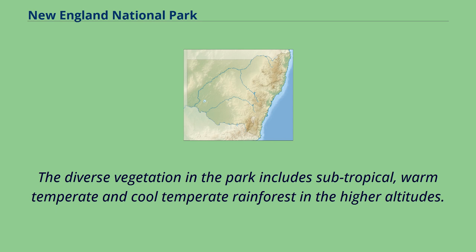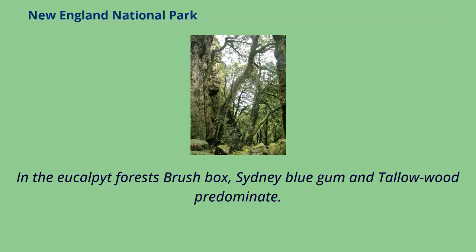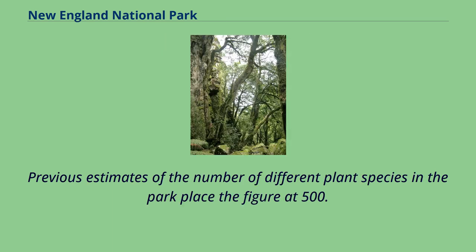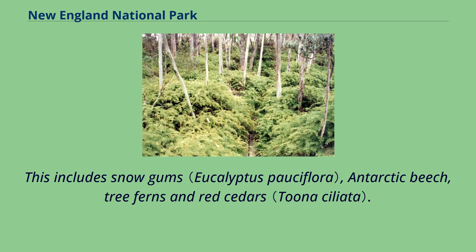The diverse vegetation in the park includes subtropical, warm-temperate and cool-temperate rainforest in the higher altitudes. There are also areas of sclerophyll forest, subalpine woodland, heathland and swampland. In the eucalypt forests, brush box, Sydney blue gum and tallowwood predominate. Heathland is found at Wright's Lookout and in other patches. Previous estimates placed the number of plant species at 500, but this figure has been revised upward to around 1,000, including snow gums, Antarctic beech, tree ferns and red cedars.